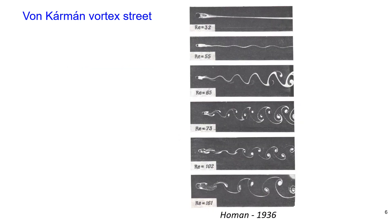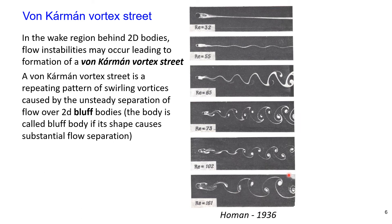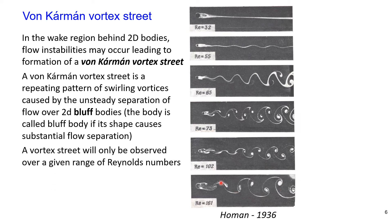Experiments show that in the wake region behind 2D bodies, flow instabilities may occur leading to formation of a von Kármán vortex street. A von Kármán vortex street is a repeating pattern of swirling vortices caused by unsteady separation of flow over 2D bluff bodies. A body is called a bluff body if its shape causes substantial flow separation. The vortex street is only observed over a given range of Reynolds number.